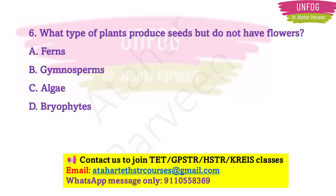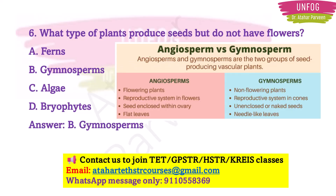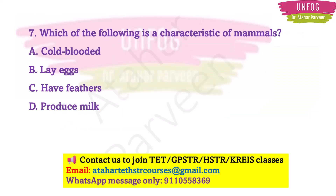Question 6: What type of plants produce seeds but do not have flowers? The options are ferns, gymnosperms, algae, and bryophytes. The correct answer is gymnosperms — these are plants which produce seeds but do not have flowers. Angiosperms, on the other hand, are the plants which do have flowers. Take it as an assignment to learn the important points related to ferns, algae, and bryophytes.